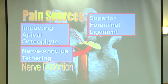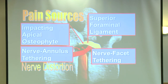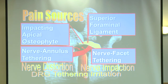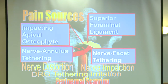Nerve distortion by the underlying disc is a cause of pain. Then we have facet joint nerve tethering and impaction — a double whammy — the dorsal root ganglion becomes irritated, and we make it worse by doing surgery nearby and adding to the overall scarring.